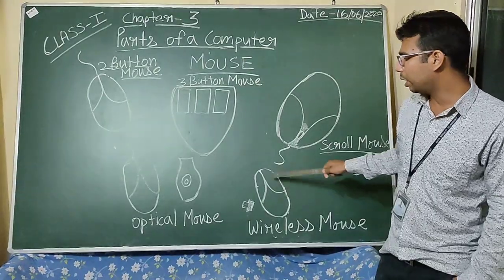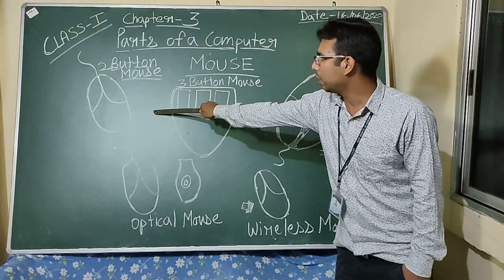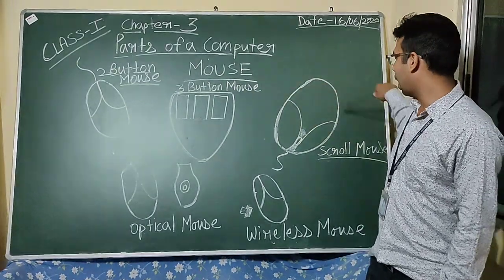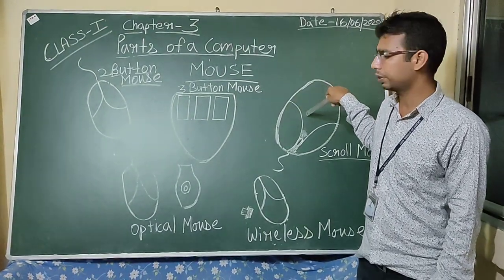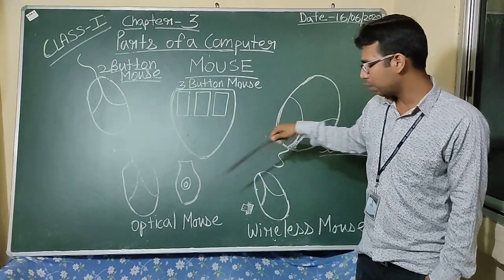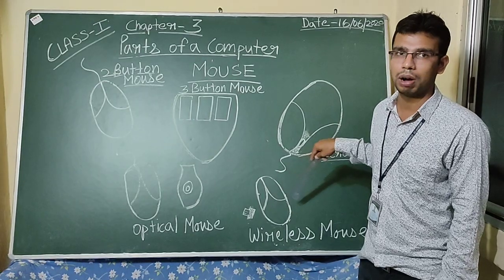Wireless mouse works without wire. 2 button mouse, 3 button mouse and scroll mouse are oldest type of mouse. Optical mouse and wireless mouse are latest type of mouse.